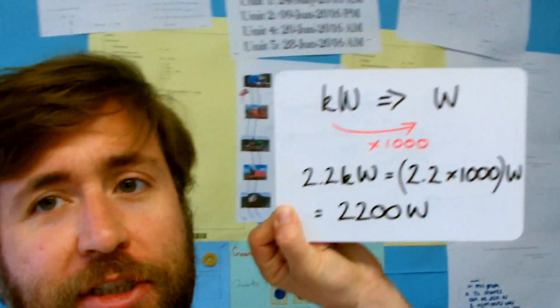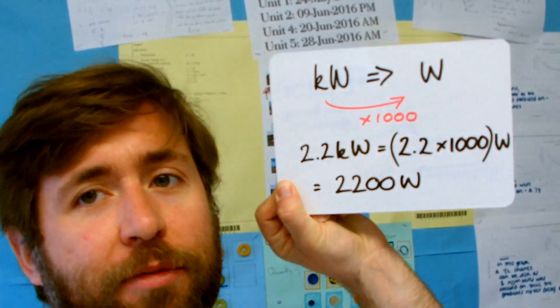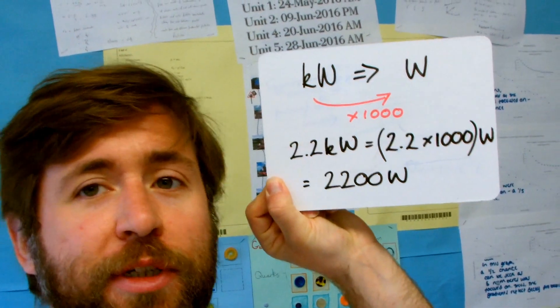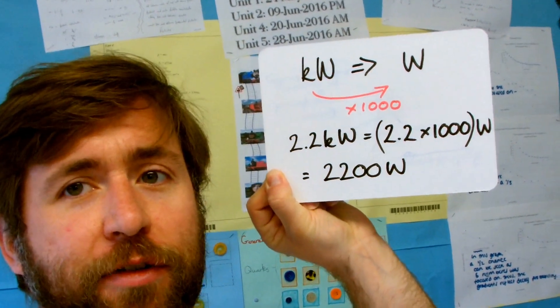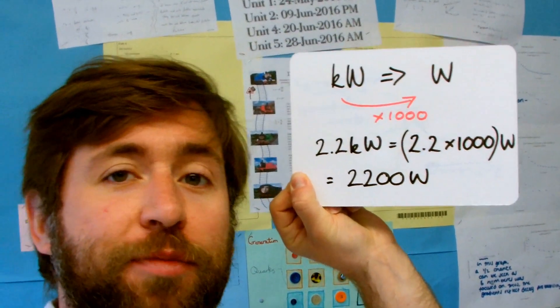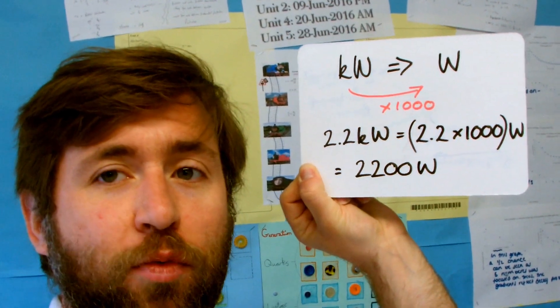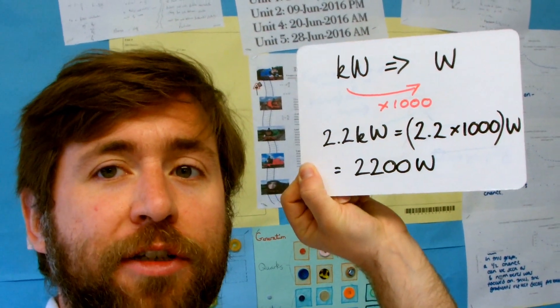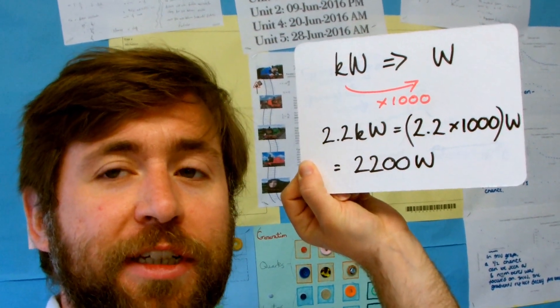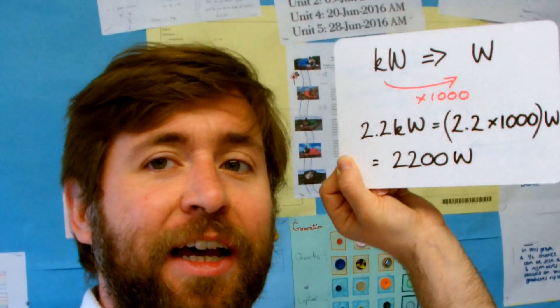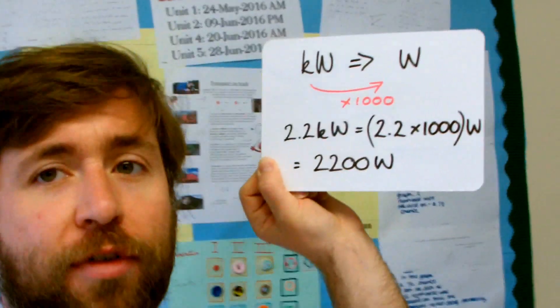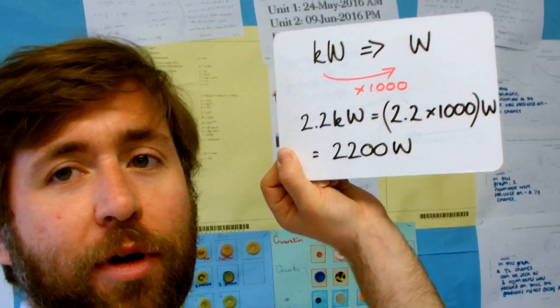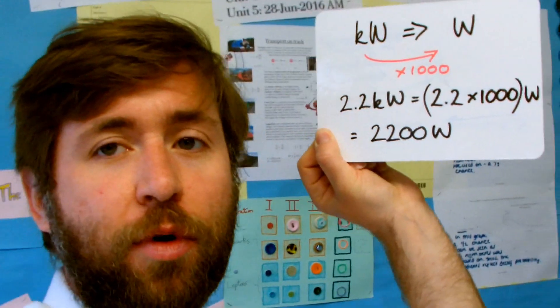That's a really common one, especially at GCSE, where you need to be able to convert between kilowatts and watts. So this direction is you've been given kilowatts and you need it in watts. I'm suggesting you see that 'kilo' as just times by a thousand — it means a thousand of. So a kilowatt is a thousand watts.